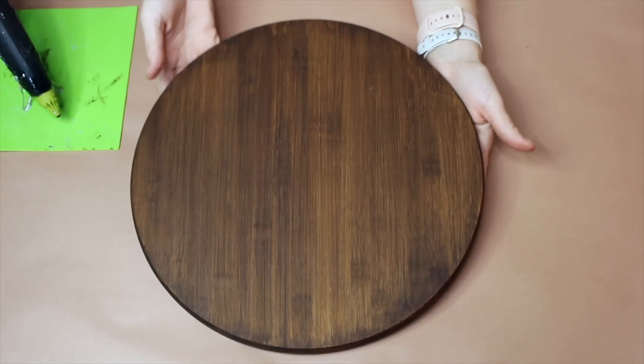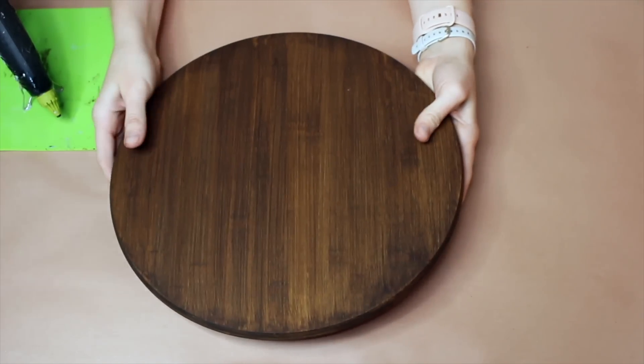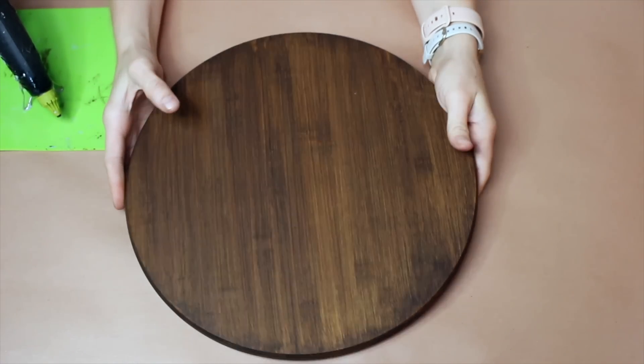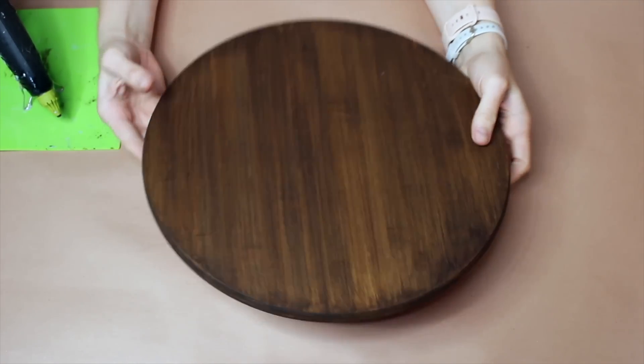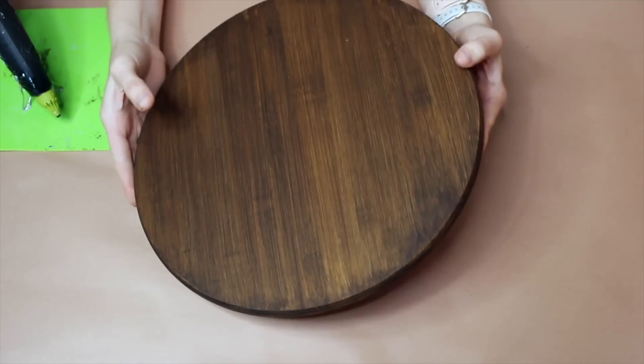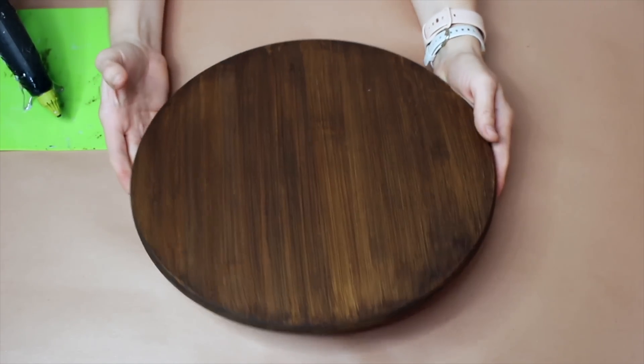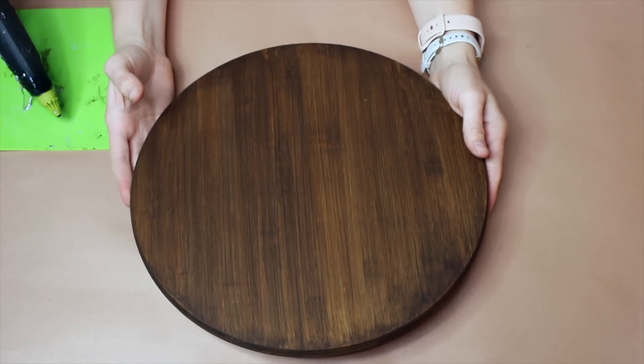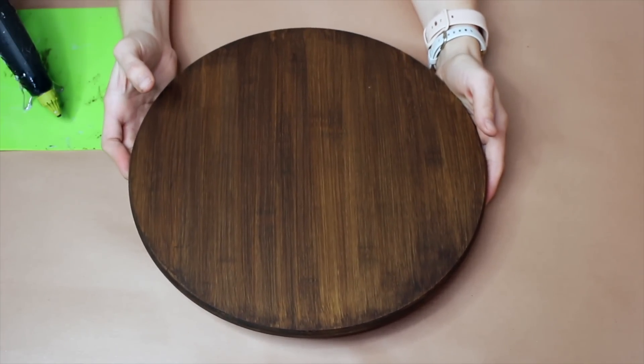Alright, so here is my lazy Susan now after I want to say like four or five coats of that rustic wood brown stain but I'm actually really happy with how it turned out. It actually got a lot darker than I envisioned it being. So I'm going to set this aside for now and we're going to go ahead and move on to our next step.